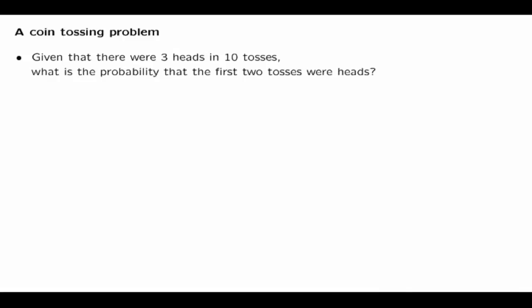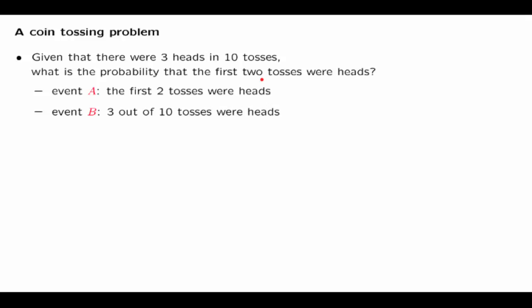Let us now put to use our understanding of the coin tossing model and the associated binomial probabilities. We will solve the following problem. We have a coin which is tossed 10 times, and we are told that exactly 3 out of the 10 tosses resulted in heads. Given this information, we would like to calculate the probability that the first two tosses were heads. This is a question of calculating a conditional probability of one event given another.